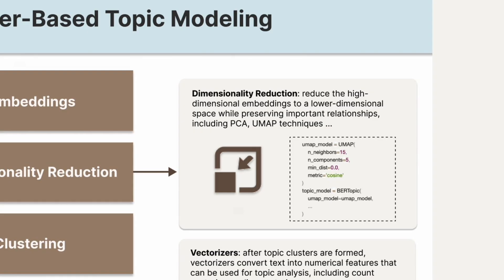There are two main techniques to integrate with BERTTopic for dimensionality reduction while keeping the important patterns in our data: Principal Component Analysis (PCA) and Uniform Manifold Approximation and Projection (UMAP). We'll focus on UMAP since it's the default method in BERTTopic. UMAP is a non-linear algorithm that comes from topology analysis and helps us find different patterns in the data by creating connections between data points that are close to each other.